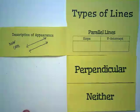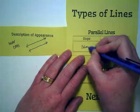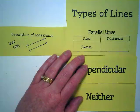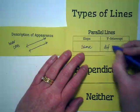What is true about parallel line slope? It's the same. And what is true about parallel lines y-intercepts? They are different.